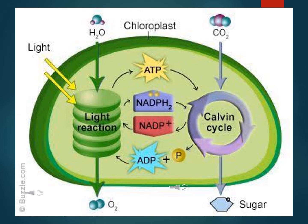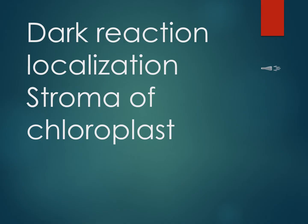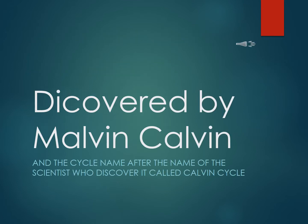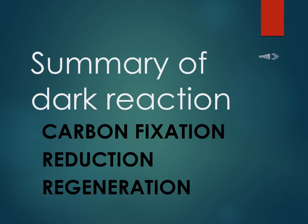The end product of dark reaction is glucose, and the end products of light reactions are ATP, NADPH, and oxygen. ATP and NADPH plus carbon dioxide are utilized by the Calvin cycle. Dark reaction localization is the stroma of the chloroplast. It was discovered by Melvin Calvin, and the cycle is named after him — the Calvin cycle.